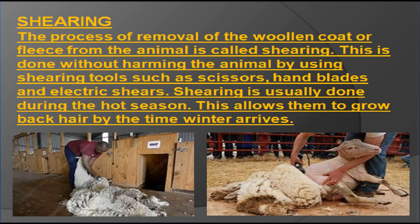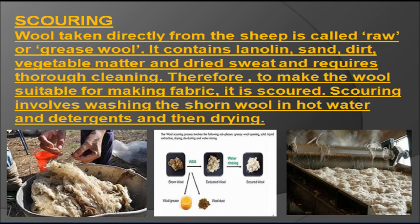Scouring: Wool taken directly from the sheep is called raw or greased wool. It contains sand, dirt, grease, vegetable matter and dried sweat, and requires thorough cleaning. Therefore, to make the wool suitable for making fabric, it is scoured. Scouring involves washing the shorn wool in hot water and detergent and then drying.